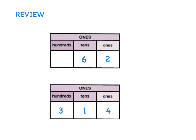You have learned about the ones, tens, and hundreds places. Here are two different numbers written using place value charts. As you can see, the 6 is in the tens place, so it has a value of 60. The 2 is in the ones place; it has a value of 2. Together, these digits make the number 62.